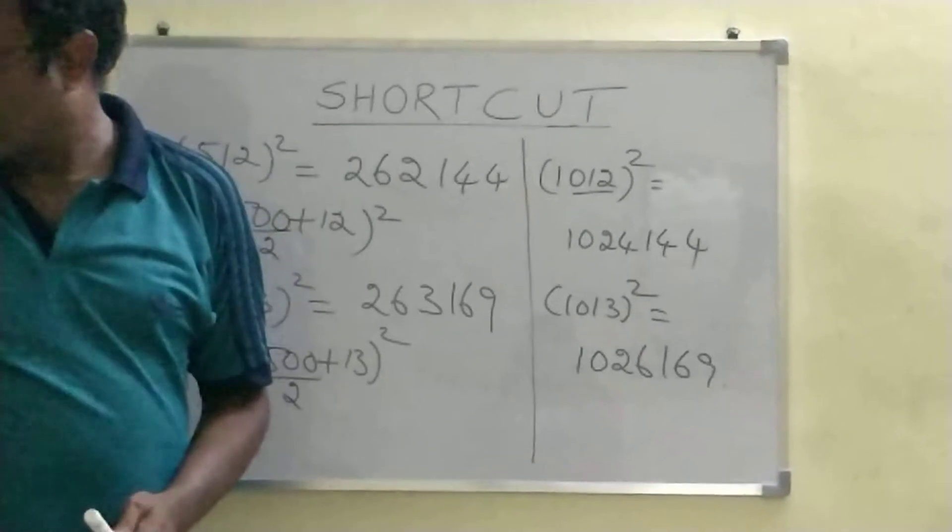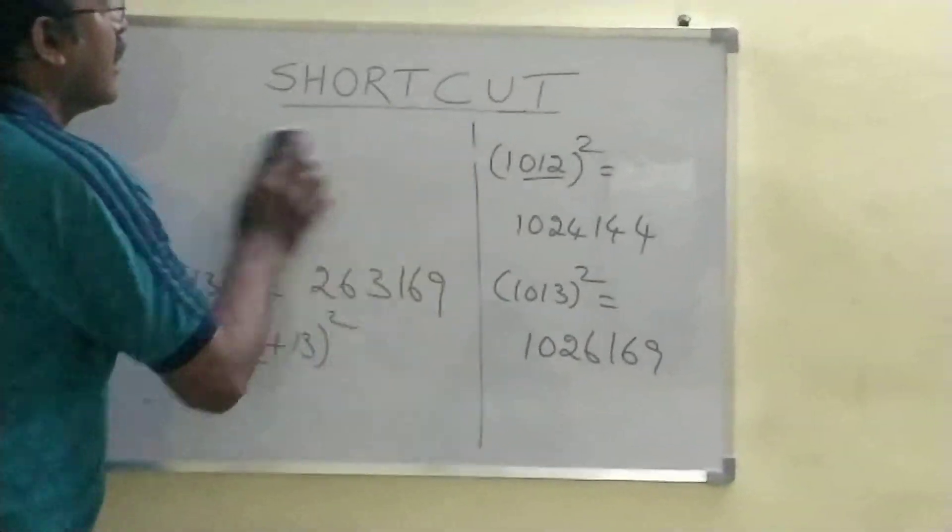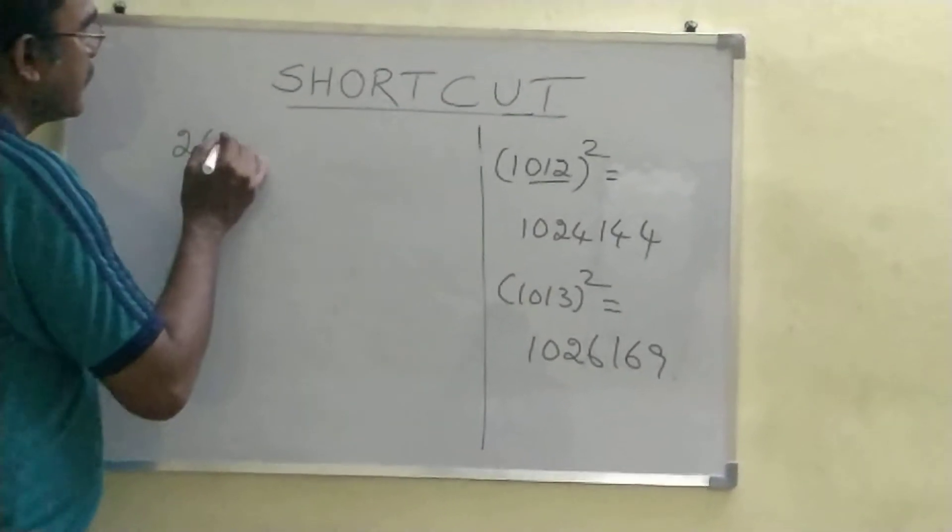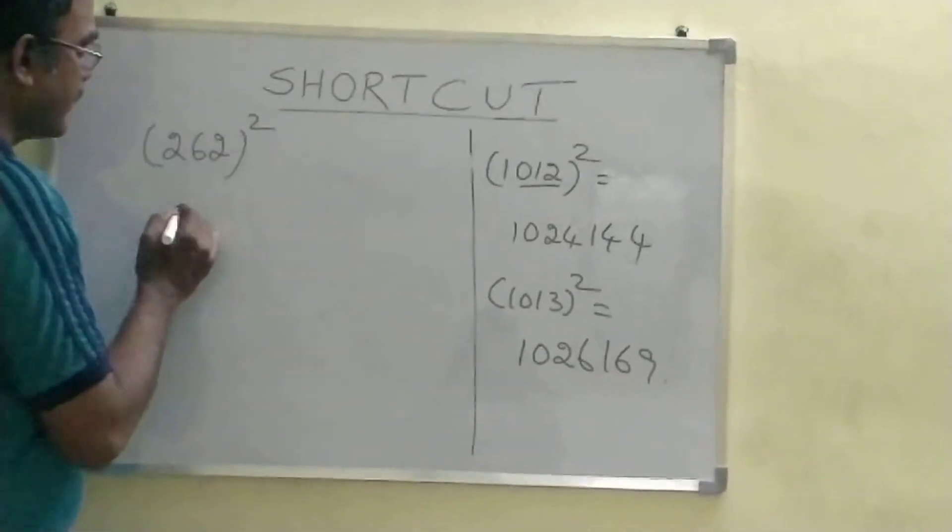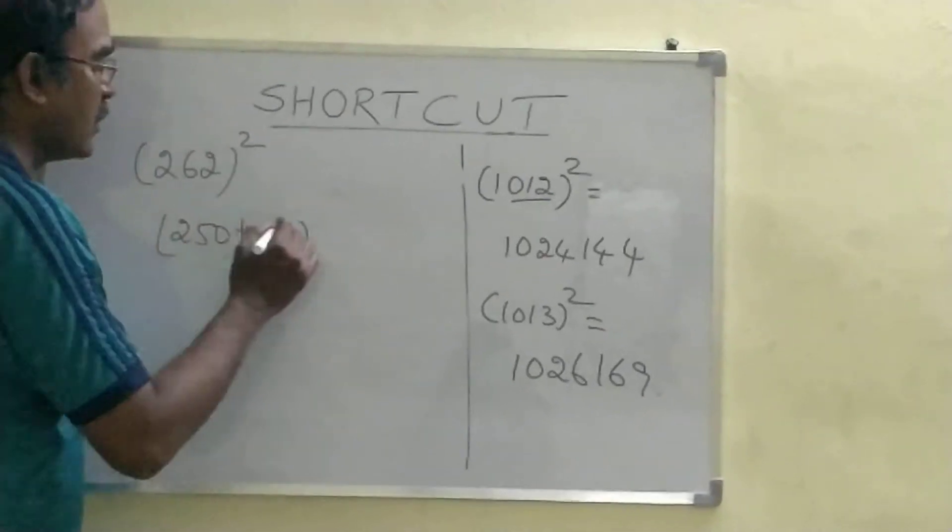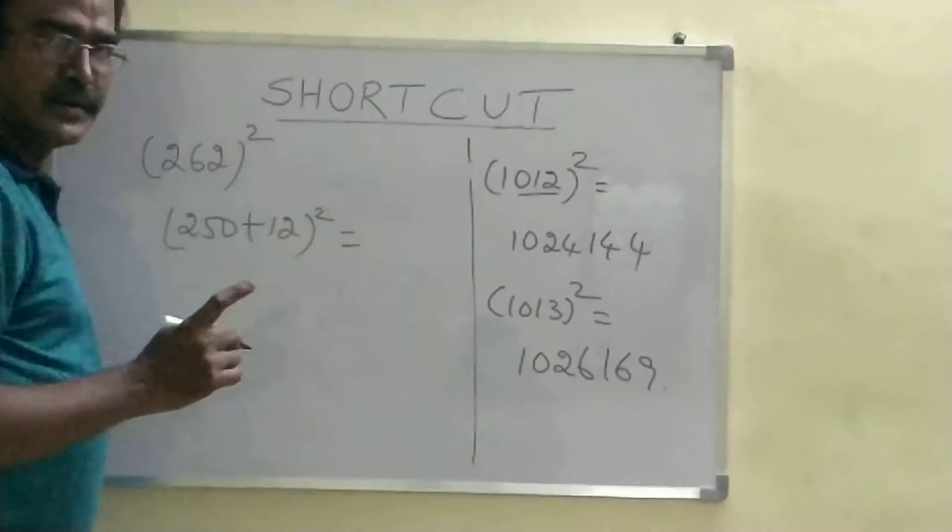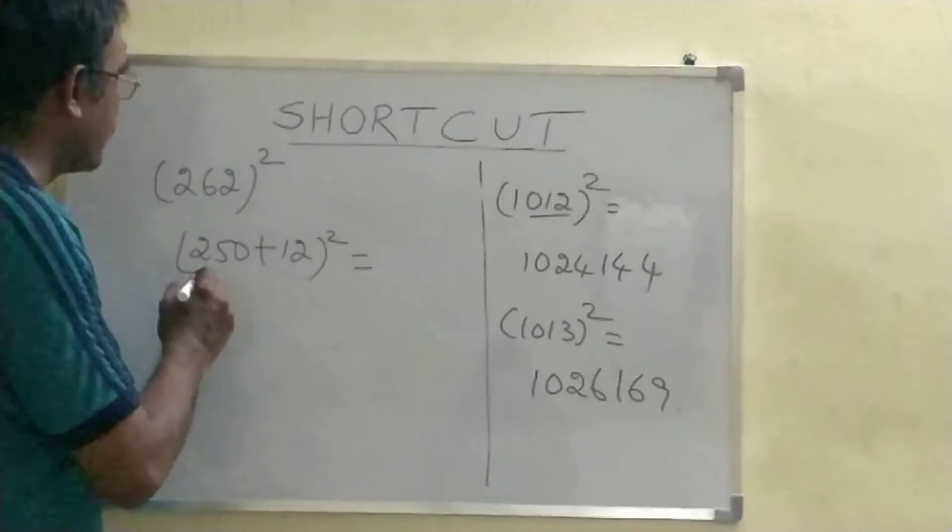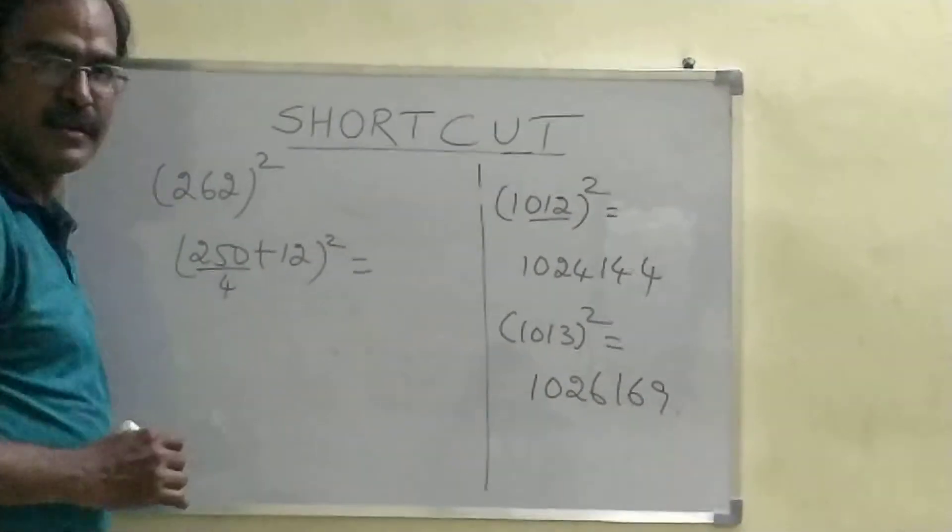Let's do one more example. How to do this? 262 whole square. 262 whole square. The same way, we can divide this number. 250 plus 12 whole square. Now, earlier, we divided the number by 2. This time, we are going to divide this number by 4.